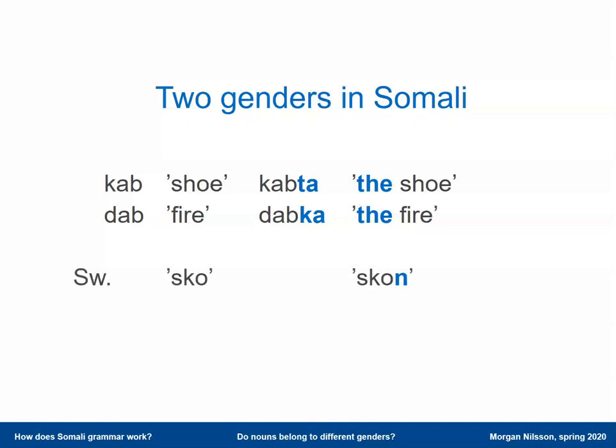And just for comparison, it's not that exotic to have the definite article as an ending at the end of the noun — that is also true for many other languages. For example, Swedish, where 'the shoe' is 'skun,' with 'n' added to the end of the noun marking the definite article. And Bulgarian even has the same suffix as Somali, so 'the shoe' is 'obuvkata,' with 'ta' at the end.